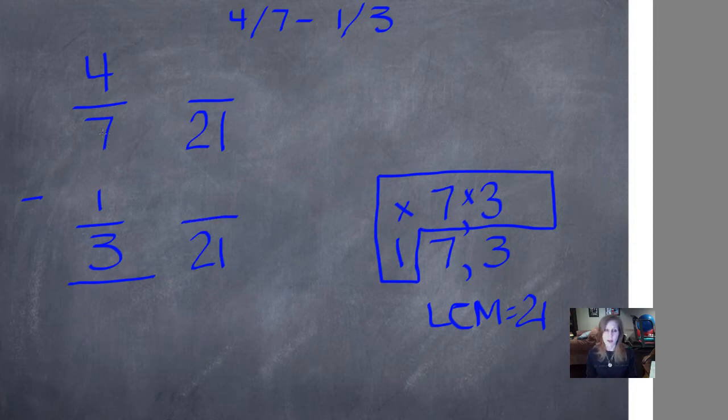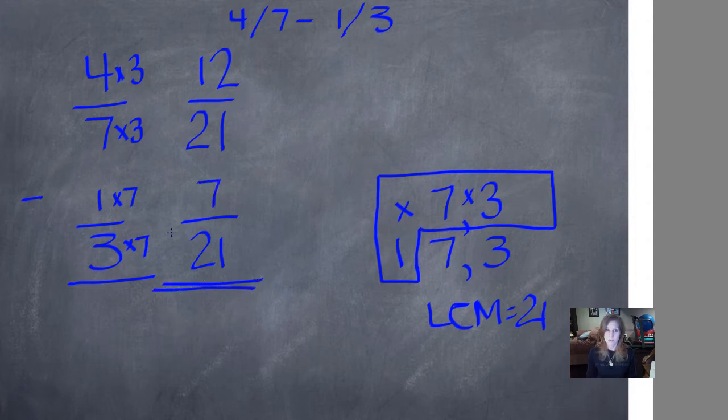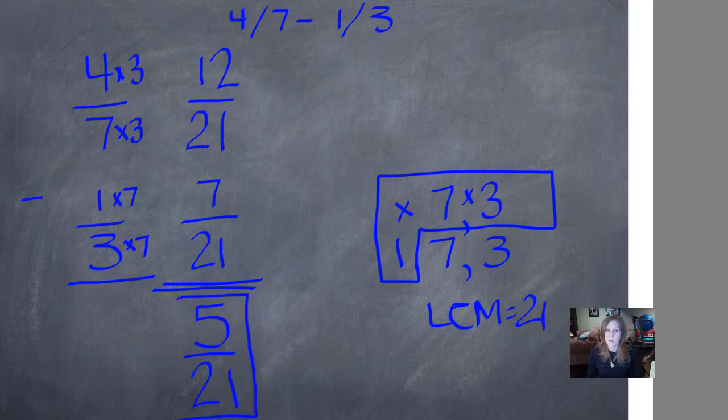My new common denominator, or my new denominator that is the same, is going to be 21. I ask myself, what would I multiply this seven by to get 21? Seven times three is 21. Whatever I do to the denominator, I have to do to the numerator. So I multiply four times three as well, and four times three is 12. Now I come down to this fraction. What do I do to three to get to 21? I multiply it by seven. Three times seven is 21, so one times seven is seven. Now I'm ready to subtract. Remember, I only subtract the numerator. Twelve minus seven is five. And my numerator, 21, stays the same. I know that I can't simplify this fraction because five is a prime number and five won't divide evenly into 21. So five twenty-firsts is my final answer.